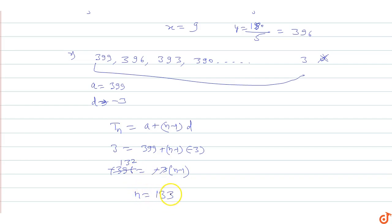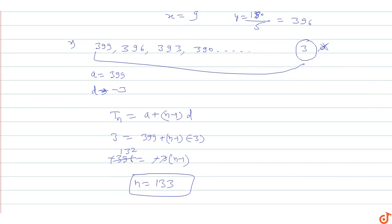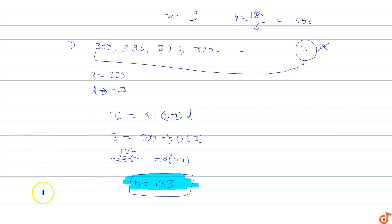So n = 133, meaning there are 133 terms. Therefore, the total number of integral points on the line 3x + 5y = 2007 in the first quadrant, not on the coordinate axes, is 133. This is the final answer.